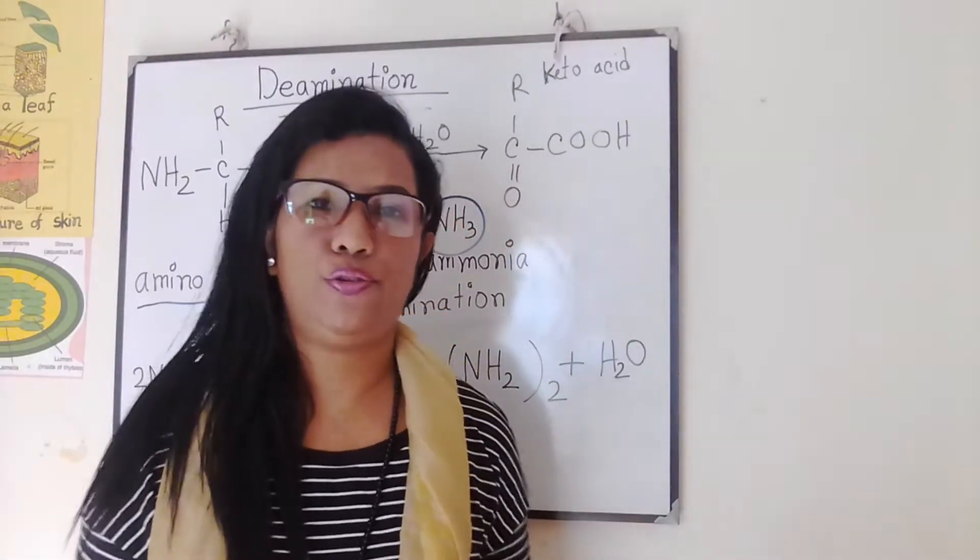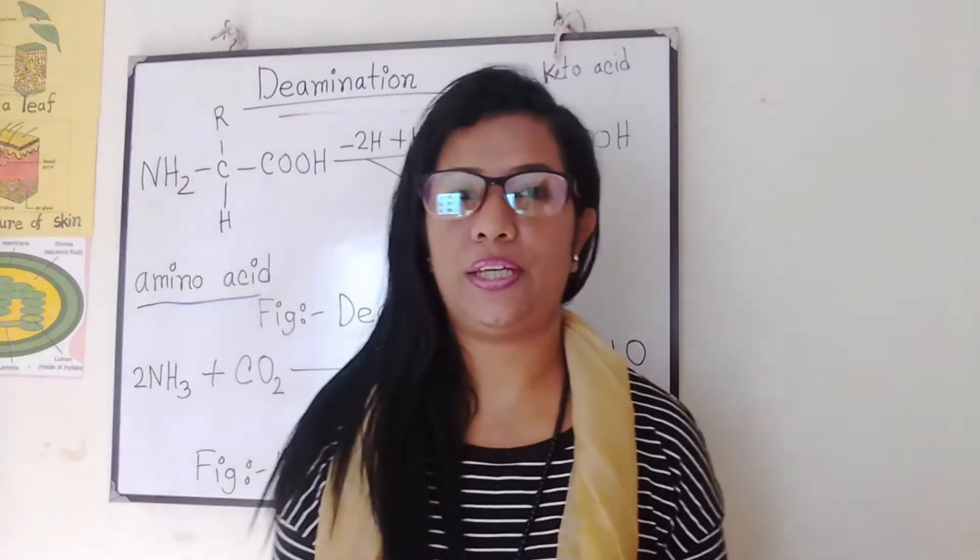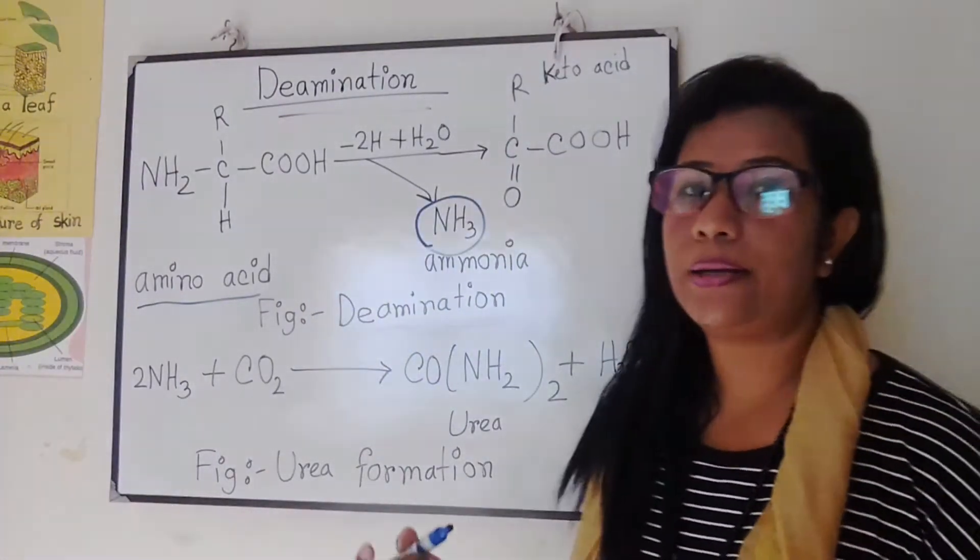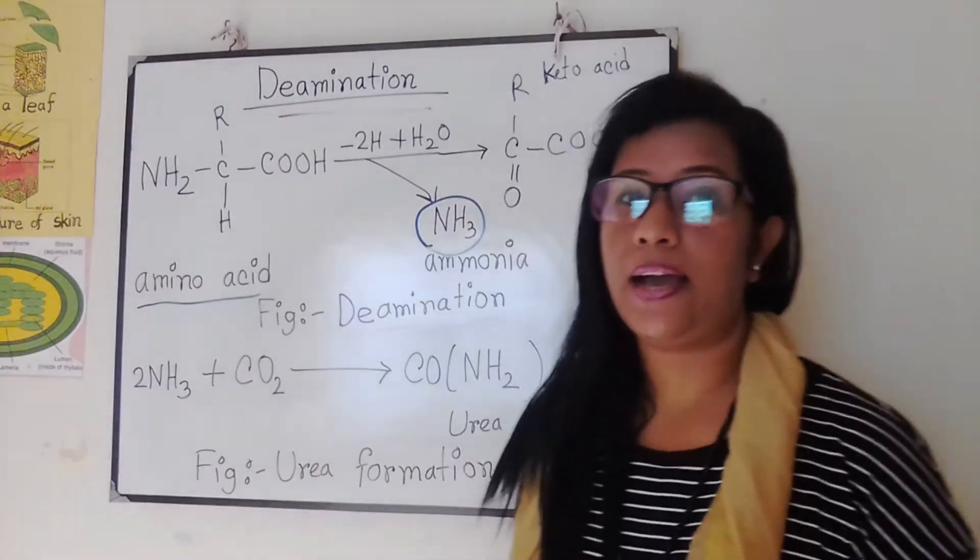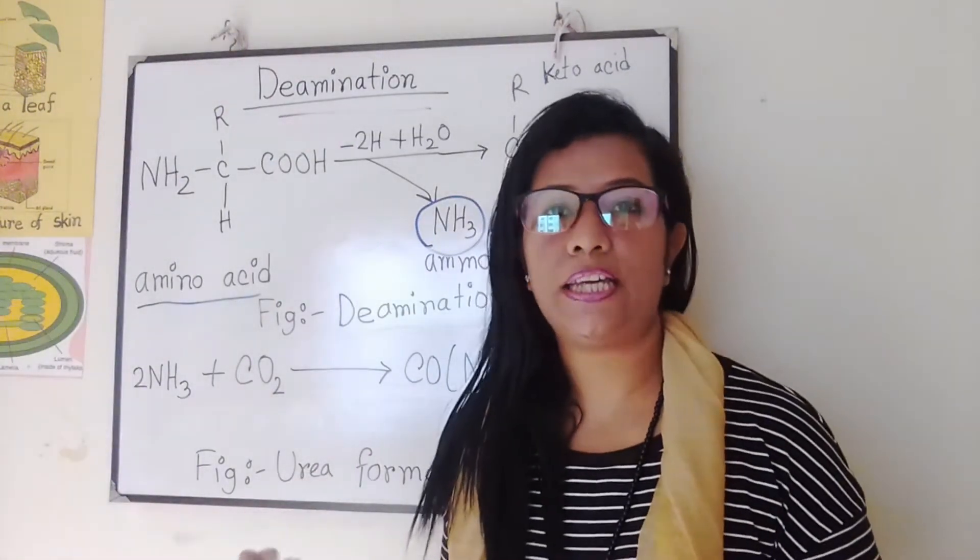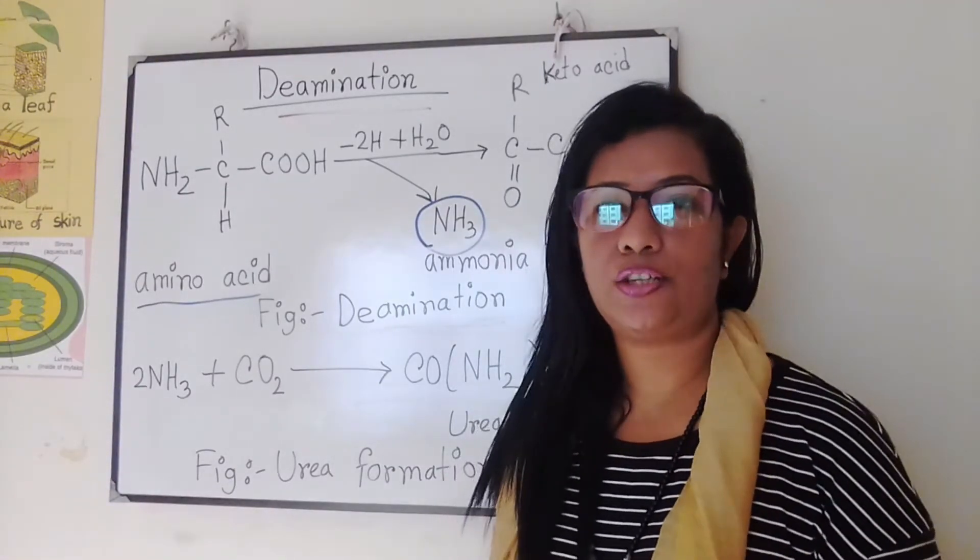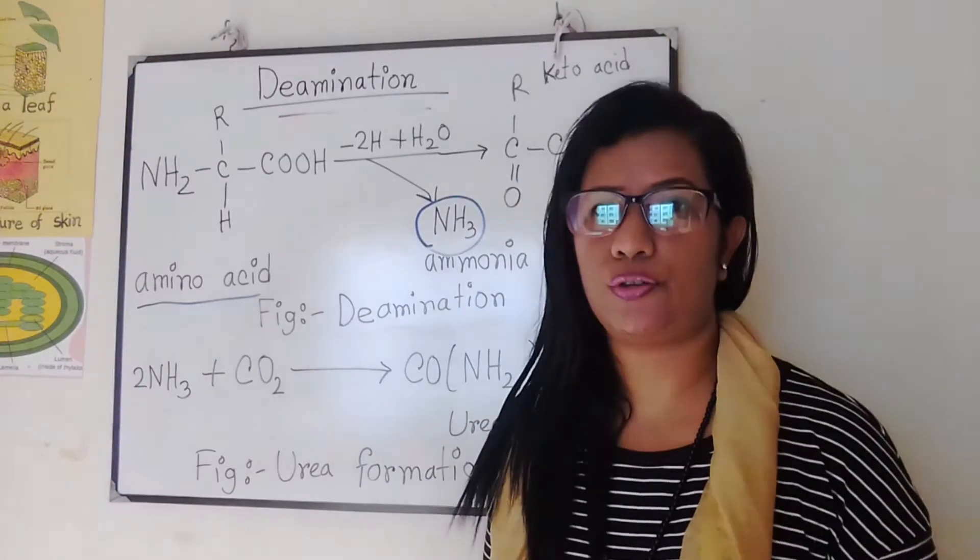These combine to produce ammonia and the keto acid. The keto acid that remains may enter the Krebs cycle and be respired, or it may be converted to glucose or fat for storage.